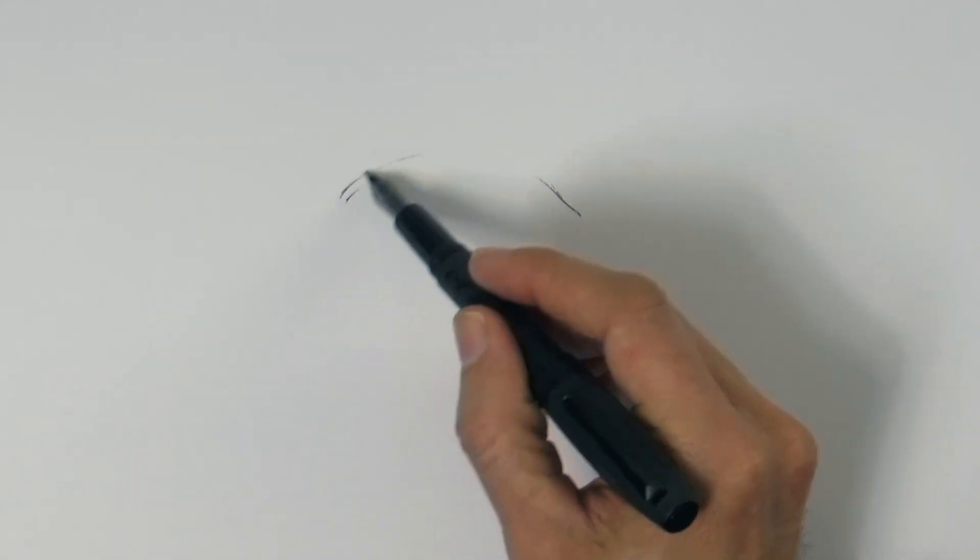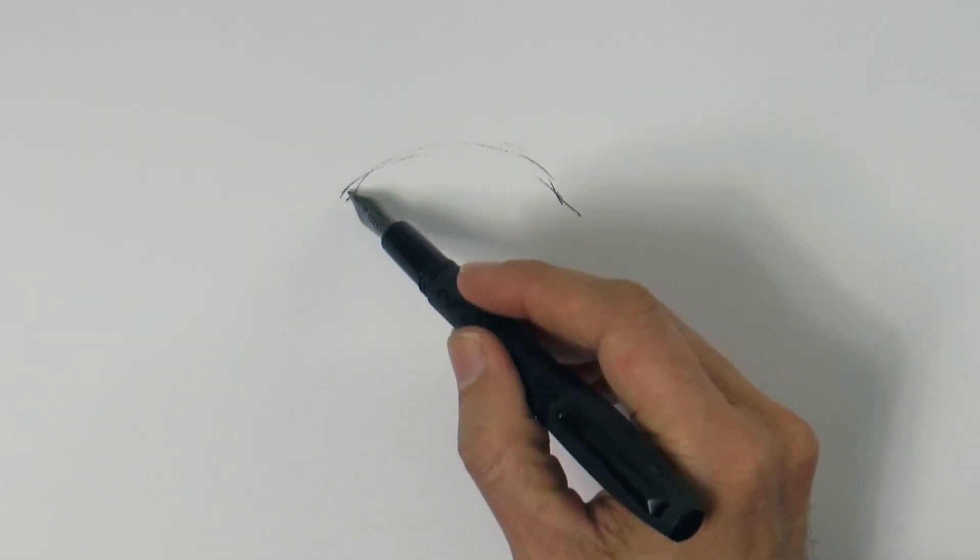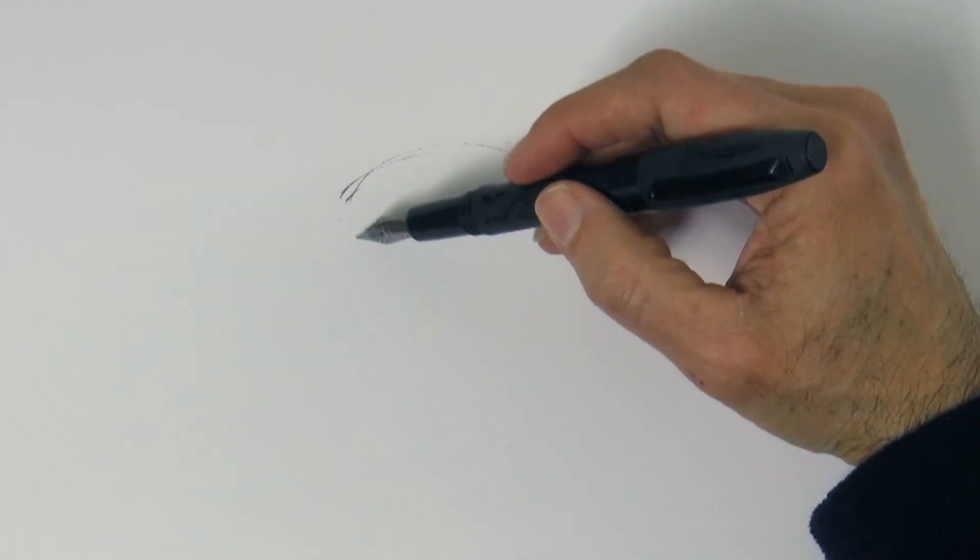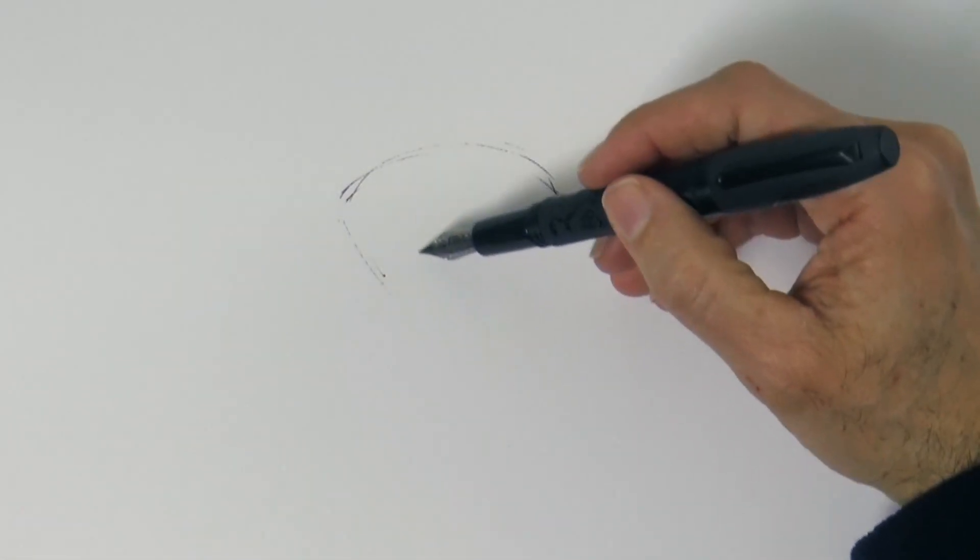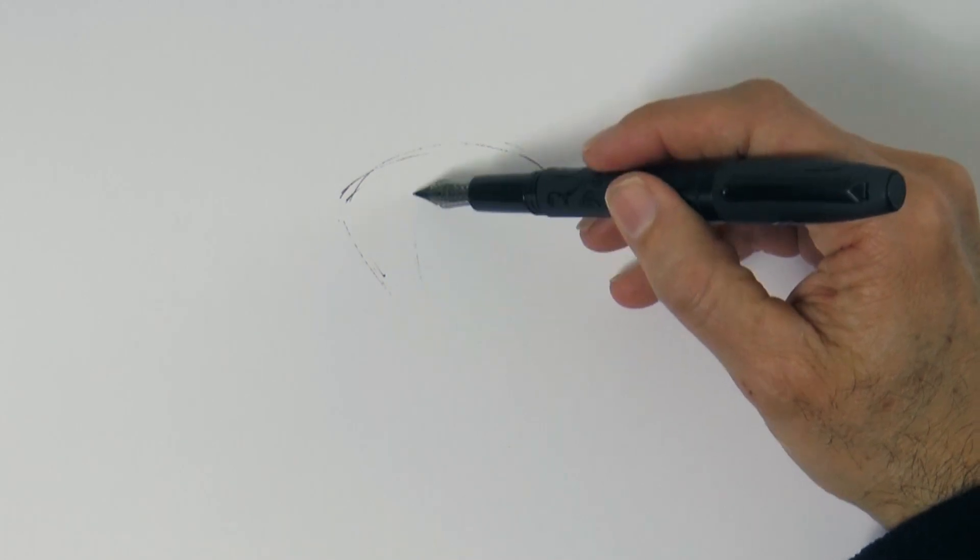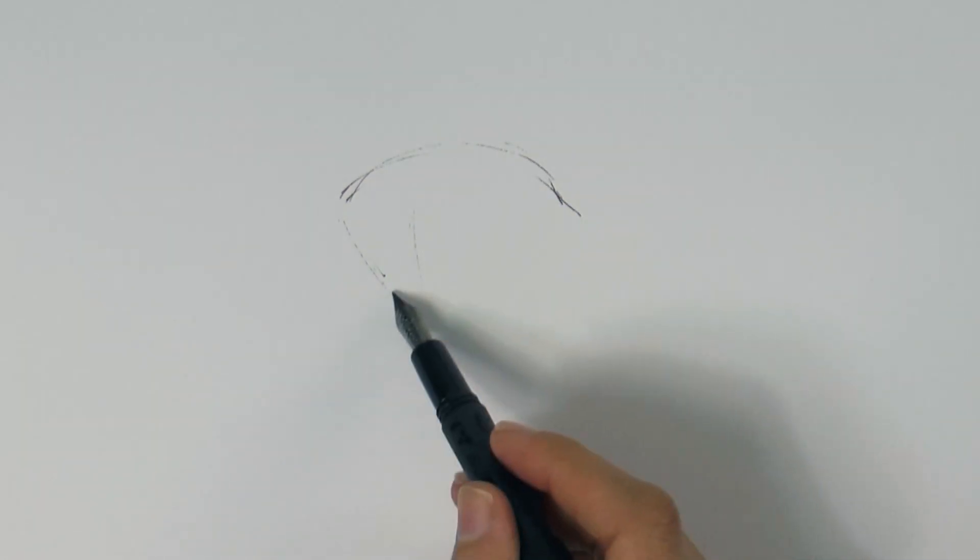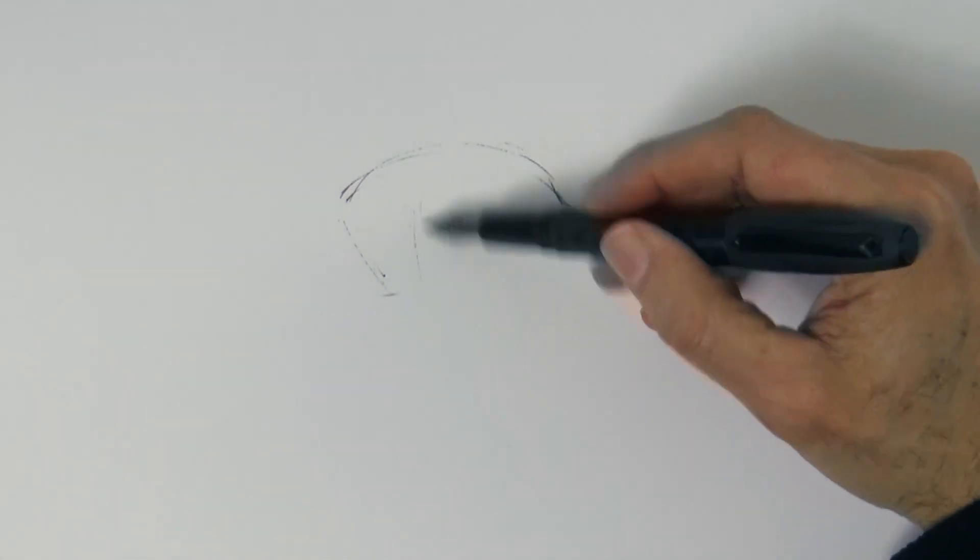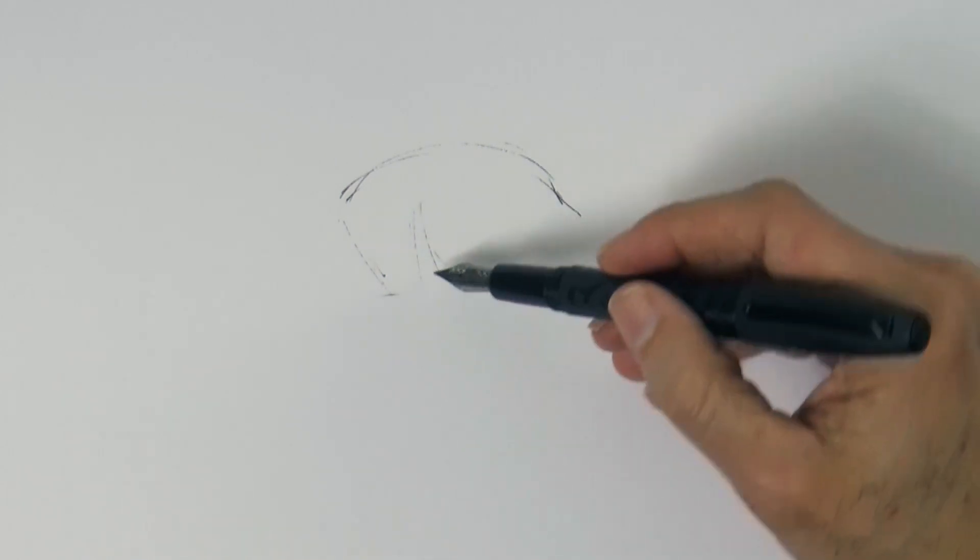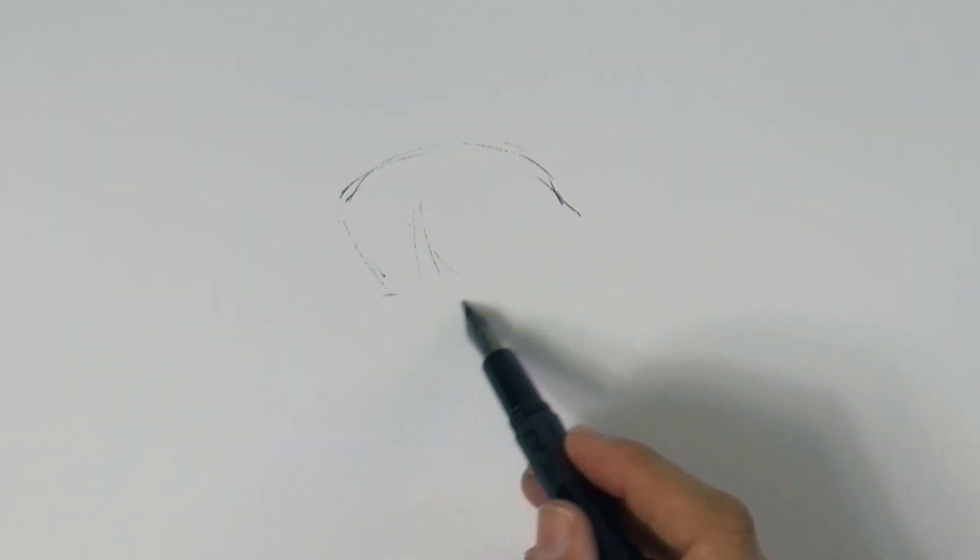Let's begin with a line for the top of the neck and then a triangular shape for the head, or a trapezium shape rather. I am barely touching the paper with the nib because these are guidelines and I want them light.